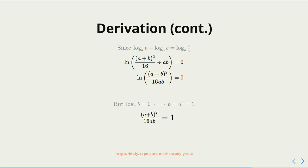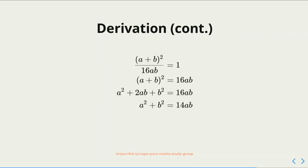From here, it's just some basic algebraic manipulation. We multiply both sides by 16ab to get (a plus b) all squared equals 16ab. Now, (a plus b) all squared is equal to a squared plus 2ab plus b squared. We subtract 2ab from both sides to get a squared plus b squared equals 14ab.